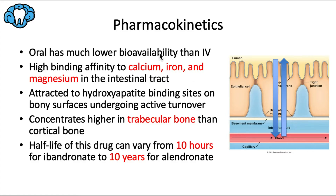Let's talk about pharmacokinetics of bisphosphonates — basically what the body does to the drug in order to process it. An oral bisphosphonate has a much lower bioavailability than an IV bisphosphonate. The oral bioavailability is only about 2%, whereas it's 100% for IV, because bioavailability is the fraction of a drug dose that reaches the general circulation — and if you inject the medication directly into the bloodstream, you'll have 100% bioavailable.